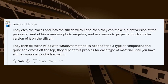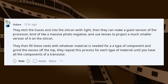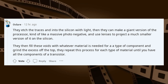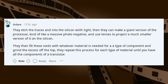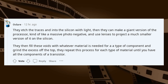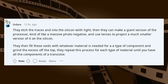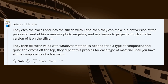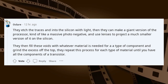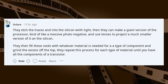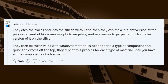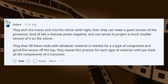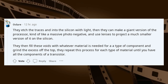They etch the traces into the silicon with light. Then they make a giant version of the processor — kind of like a massive photo negative — and use lenses to project a much smaller version of it onto the silicon. They then fill these voids with whatever material is needed for each type of component and grind the excess off the top. They repeat this process for each type of material until you have all the components of a transistor.